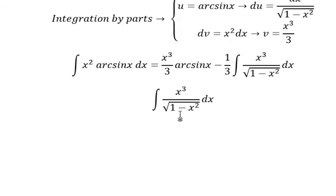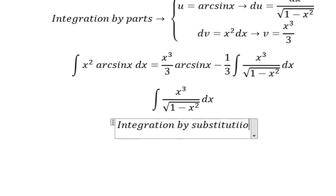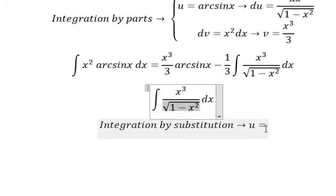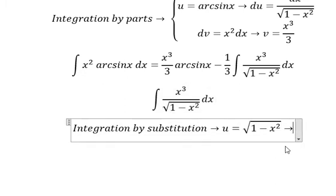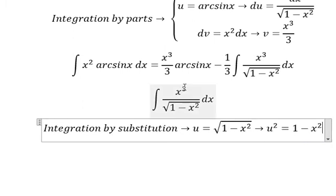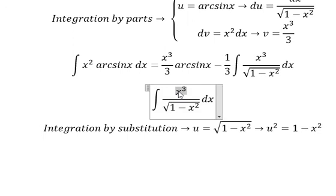So we can use integration by substitution. So we put u equals to this one. Later that, we put the square on both sides. Because we still have x square in here. That is from x square with x. So we put this one on the left, this one on the right.